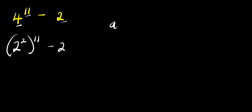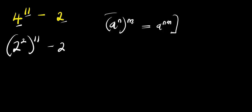If you have a to the power of n, raised to the power of n, this equals a to the power of n times n. So we apply this same identity here. We are going to have 2 to the power of 2 times 11, that is 22, minus 2.